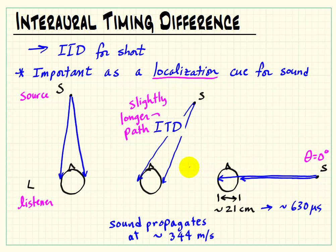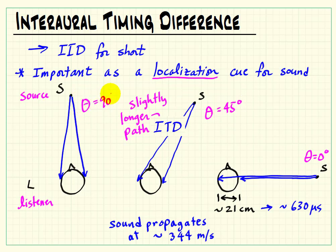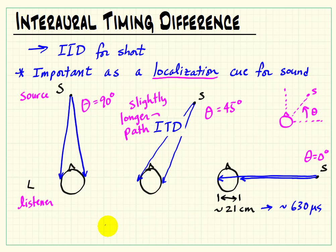If we define theta as 0 as pointing straight to the right, the picture in the middle would be theta at 45 degrees, and the picture on the far left would be theta at 90 degrees. That's our typical orientation scheme for angles.